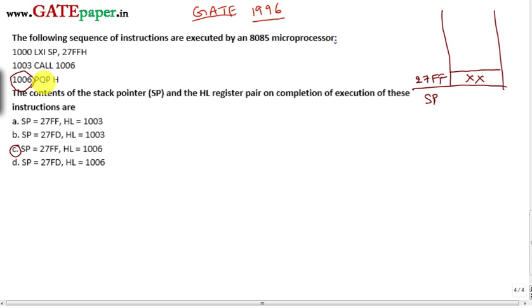This will be loaded into stack. So stack pointer first decremented for push operation. So it will become 27FE. Then higher order is going to be placed: 10. Next, again the stack pointer is decremented to 27FD and lower order 8 bits are placed.